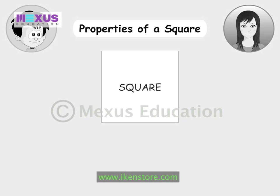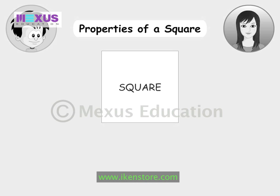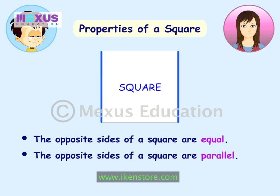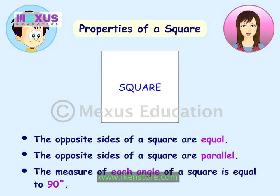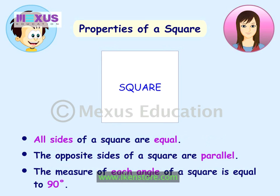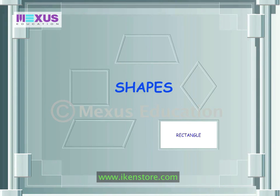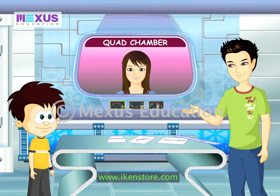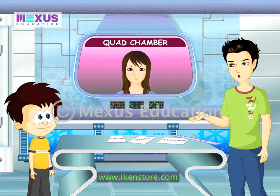A square! Like a rectangle, the opposite sides of a square are also equal and parallel, and the measure of each angle is equal to 90 degrees. Please identify one property that is unique to a square. Not just the opposite sides — all the sides of a square are equal.